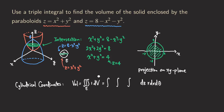To convert to cylindrical coordinates: x squared plus y squared equals r squared. So the lower z-limit becomes r squared. The upper limit is 8 minus x squared minus y squared, which becomes 8 minus r squared.